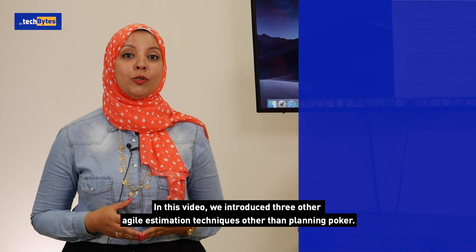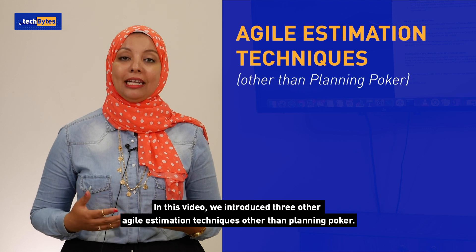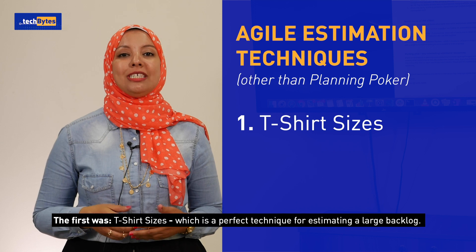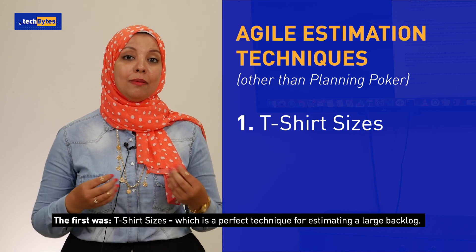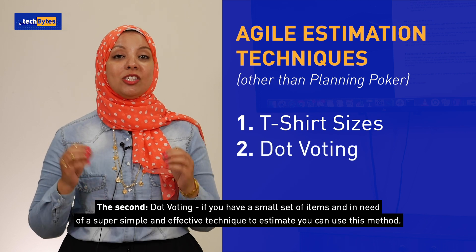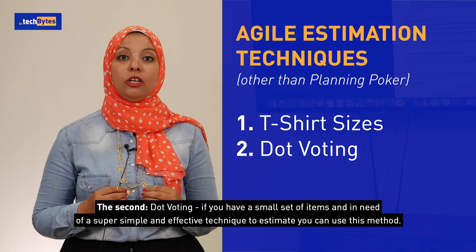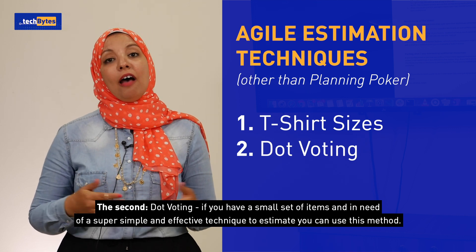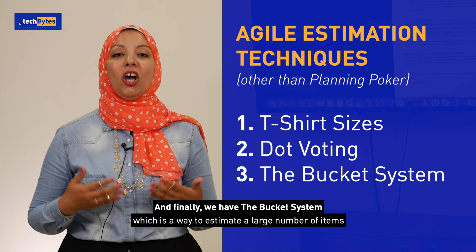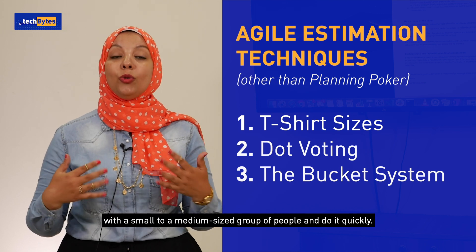In this video, we introduced three other Agile estimation techniques other than planning poker. The first was T-shirt sizes, which is a perfect technique for estimating a large backlog. The second was dot voting — if you have a small set of items and need a super simple and effective technique to estimate, you can use this method. And finally, we have the bucket system, which is a way to estimate a large number of items with a small to medium sized group of people, and to do it quickly.